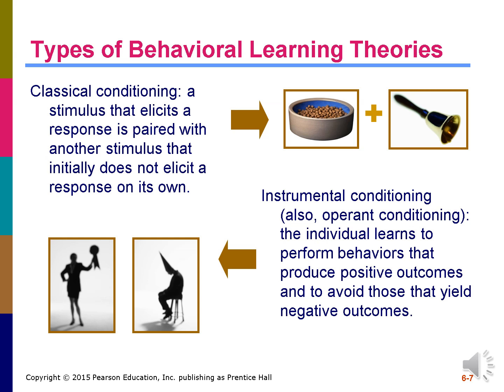There are two types of behavioral learning theories: classical conditioning and instrumental conditioning. Classical conditioning is when a stimulus that elicits a response is paired with another stimulus that initially does not elicit a response on its own. Instrumental conditioning, also called operant conditioning, is where the individual learns to perform behaviors that produce positive outcomes and to avoid those that yield negative outcomes. Instrumental conditioning refers to voluntary behaviors, while classical conditioning works to condition responses to involuntary behaviors.